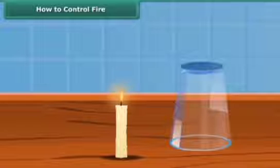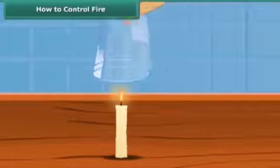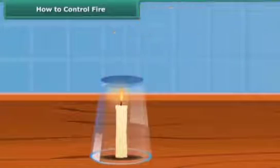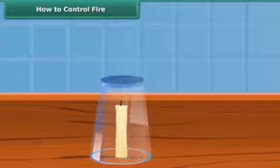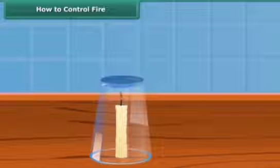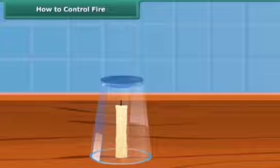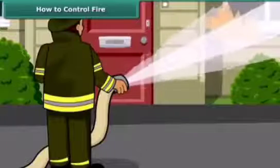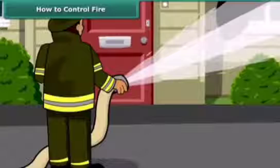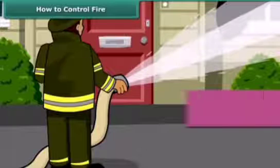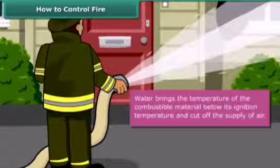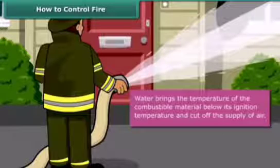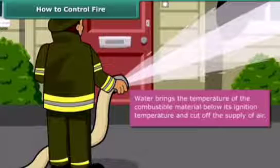Now we will see how the fire can be put off. Fire needs oxygen, heat and fuel to exist. However, it can be extinguished by removing any one of them. You must have seen firemen throwing water on the fire and the fire gets extinguished. Water brings the temperature of the combustible material below its ignition temperature and cuts off the supply of air.